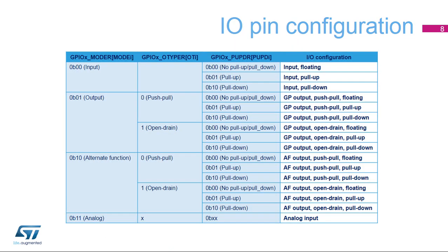The configuration of any I/O pin is achieved through three registers: GPIO X MODER or mode register, GPIO X OTYPER or output type register, and GPIO X PUPDR or pull-up pull-down register. Register GPIO X MODER selects the functionality of the I/O pin: digital input, digital output, digital alternate function, or analog. Register GPIO X OTYPER is relevant when the pin is in output mode — it selects open-drain versus push-pull operation. Register GPIO X PUPDR is relevant when the pin is not configured in analog mode — it enables or disables pull-up and pull-down resistors.